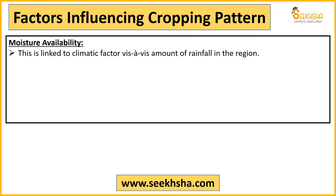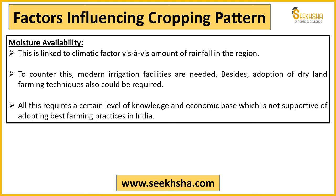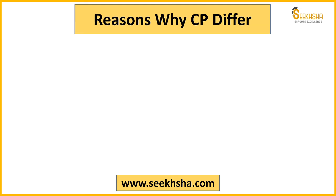Moisture availability is a climatic factor — how much rainfall is there. Modern irrigation facility is needed; if it is a dry area, dry land farming techniques need to be applied, which requires literacy, skills, and education. This is also a problem that negatively influences cropping patterns in India.